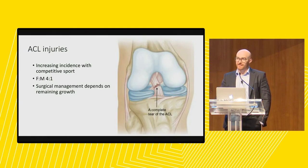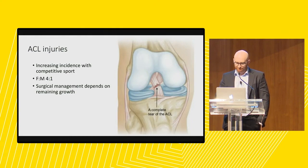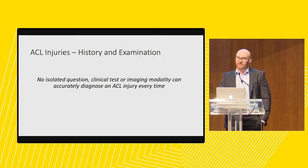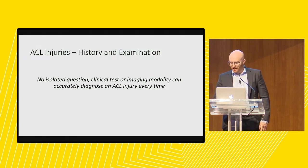For paediatric ACL injuries, what we're really concerned about compared to adults is the remaining growth. The ACL reconstructions we do in adults need to cross the physeal scar, so in paediatrics, if we do that, we'll cause a growth arrest and a limb deformity. In terms of history and examination, the main thing to note with kids is there's no question, clinical test or imaging modality that will diagnose an ACL injury every single time.